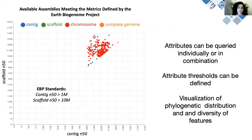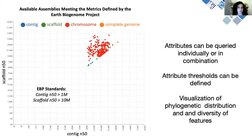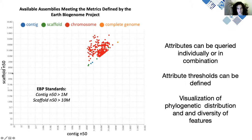It is important to emphasize that attributes in GOAT can be queried individually or in combination, and thresholds can be defined in the search. Results can be visualized both on the tree itself, but also in plots and reports, such as the one displayed here on the left side, showing available assemblies meeting the metrics defined by the Earth Biogenome Project based on contig N50 and scaffold N50.